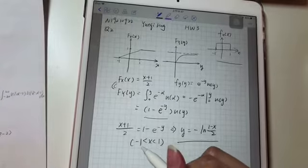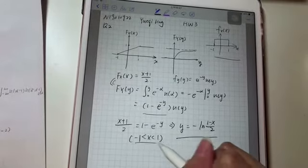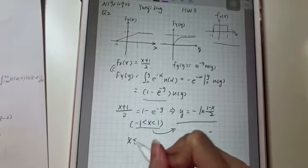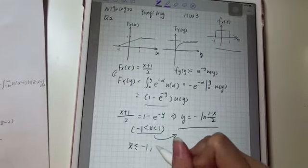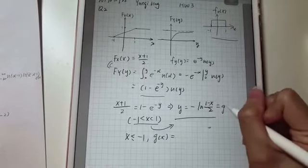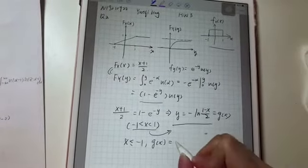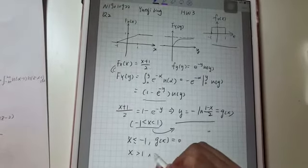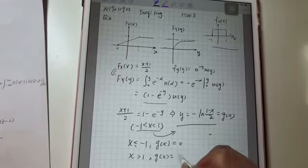Don't forget, this is under this condition. And also, when x is minus 1, we can easily get g(x) equals 0. And when x is larger than 1, g(x) equals infinity.